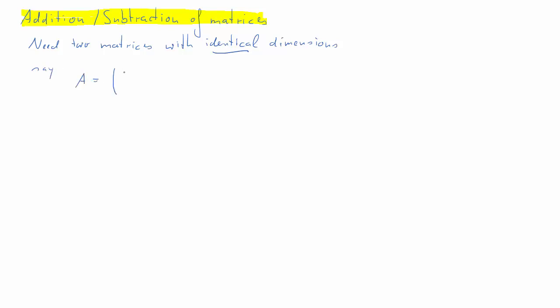Here we will work with an example. So let A be this matrix and B be this matrix. Both of these are 2 by 3 matrices and therefore have identical dimensions, so we can go ahead considering any addition or subtraction operation with these two. Let's start with A plus B.